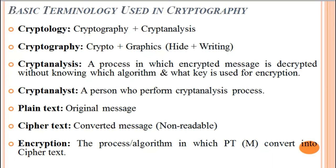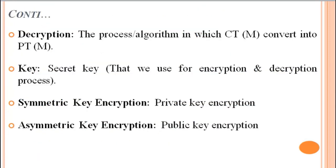A cryptanalyst is a person who performs the cryptanalysis process. Plain text means the original, real, or actual message that anyone can understand. Cipher text means the converted, non-readable form of a message — no one can understand what the sender wants to convey. Encryption is the process by which plain text is converted into non-readable message or cipher text. Decryption is the process by which cipher text is converted back into plain text or the original message.